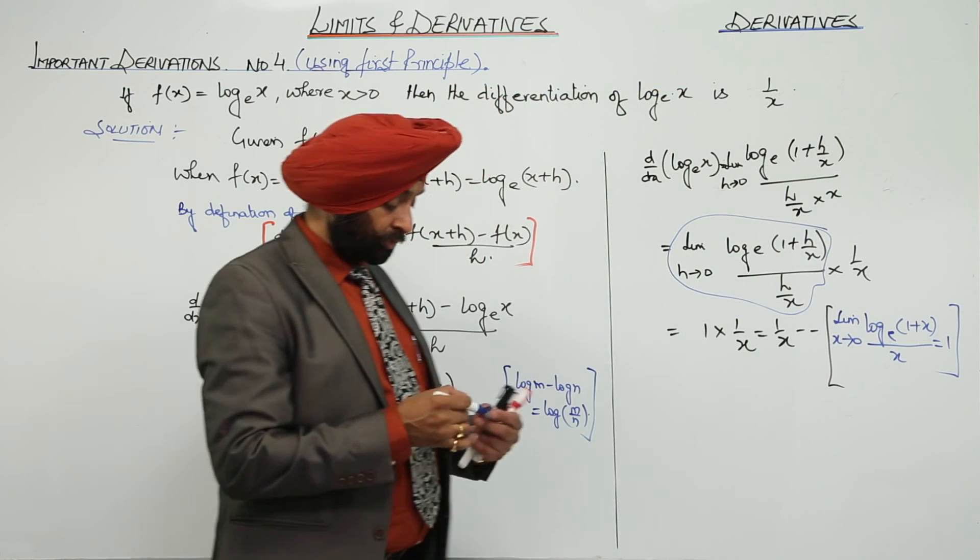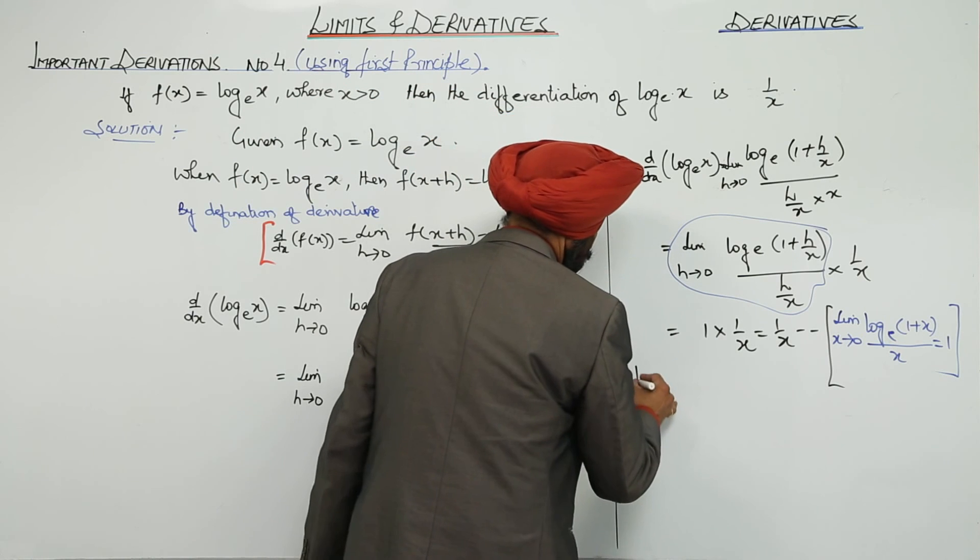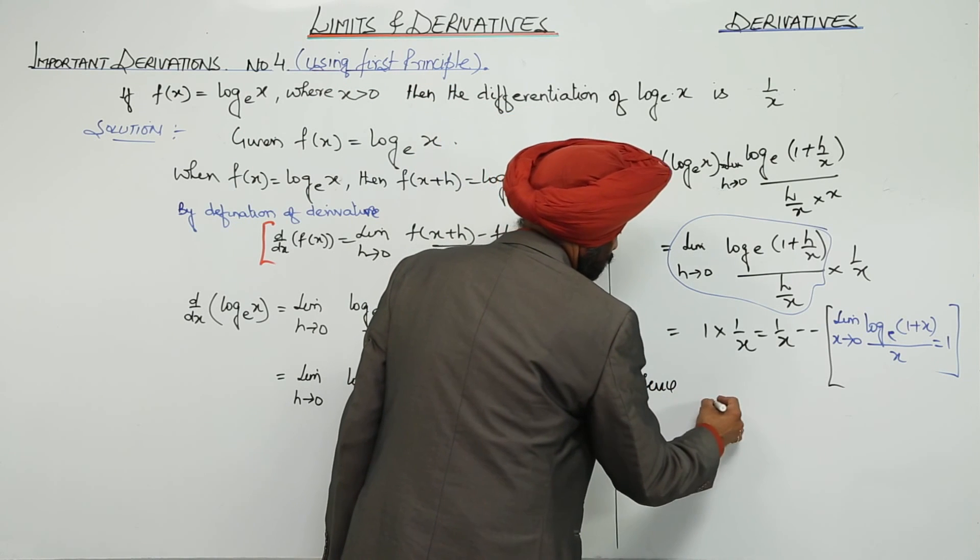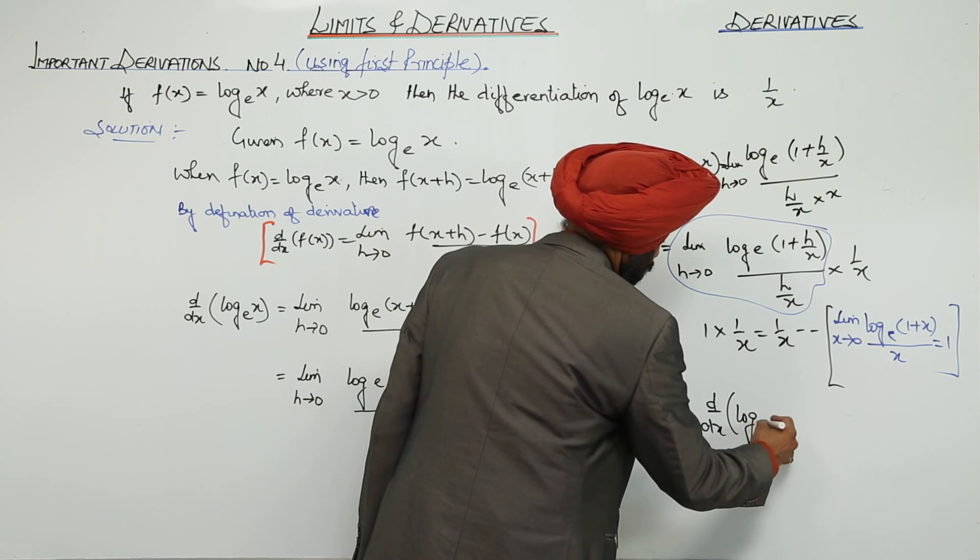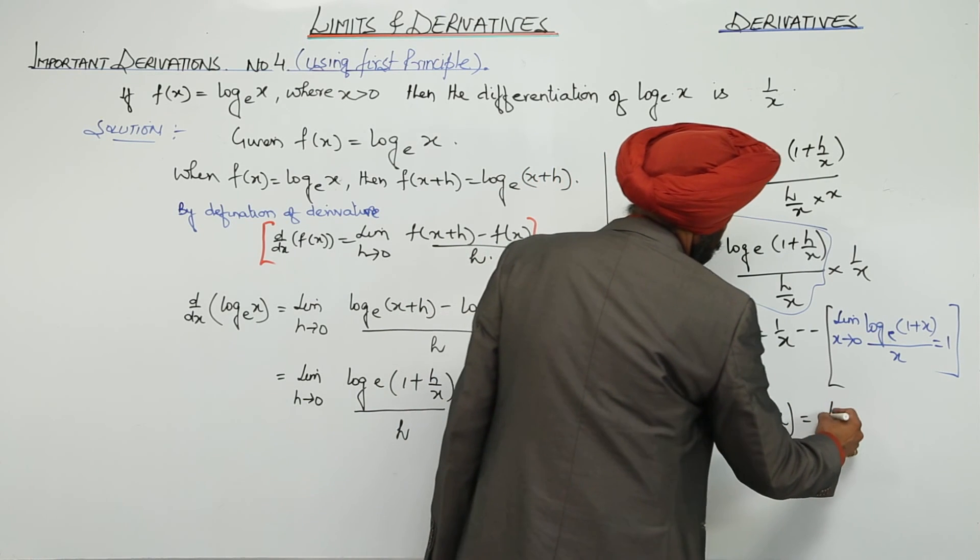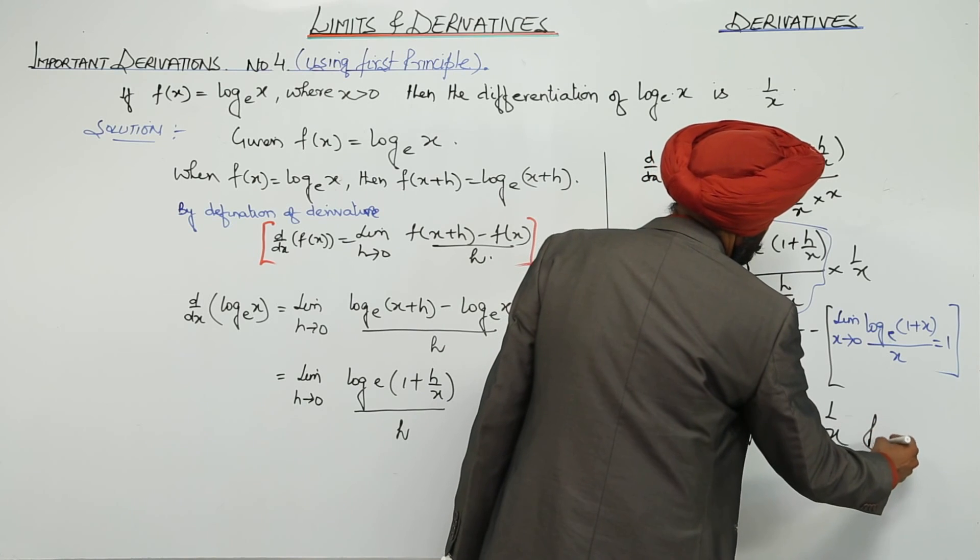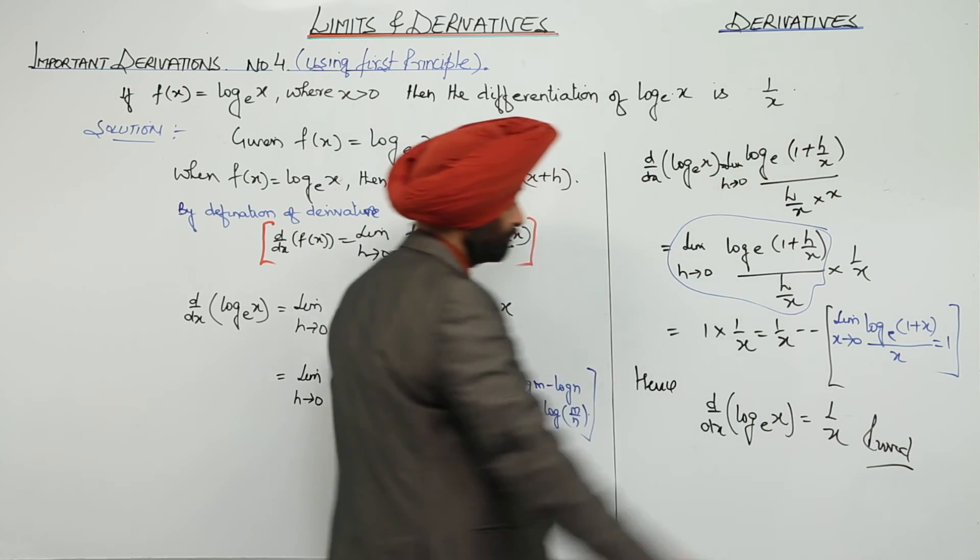Is it clear? So, finally, hence, d by dx of log x is equal to 1 by x.